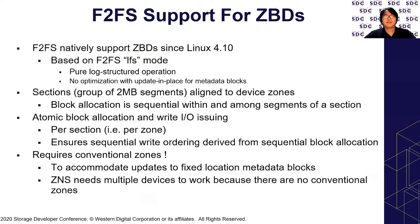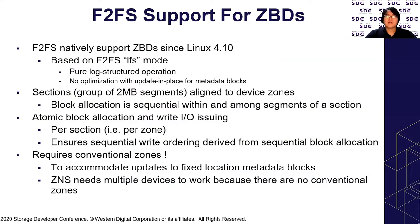The second point is atomicity of allocation and write IO issuing. Consider blocks A and B allocated in this order. Without atomicity, write order can be B then A. Since block B does not point to the write pointer — because we have block A before block B — it causes an unaligned write error which will fail the file system. So we need to add a lock per section, meaning per zone, to ensure sequential write ordering derived from sequential allocation.